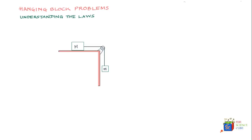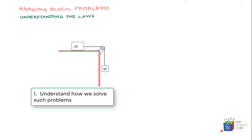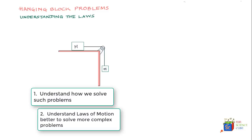In this lesson we have two objectives. First, we'll try to understand how you can solve problems where you have masses sitting on the table and masses hanging from the pulley on one side or the other. Second, and more importantly, we want to understand Newton's laws of motion better so that when you get more complex problems you should be able to tackle them because of your superior understanding of the laws of motion.